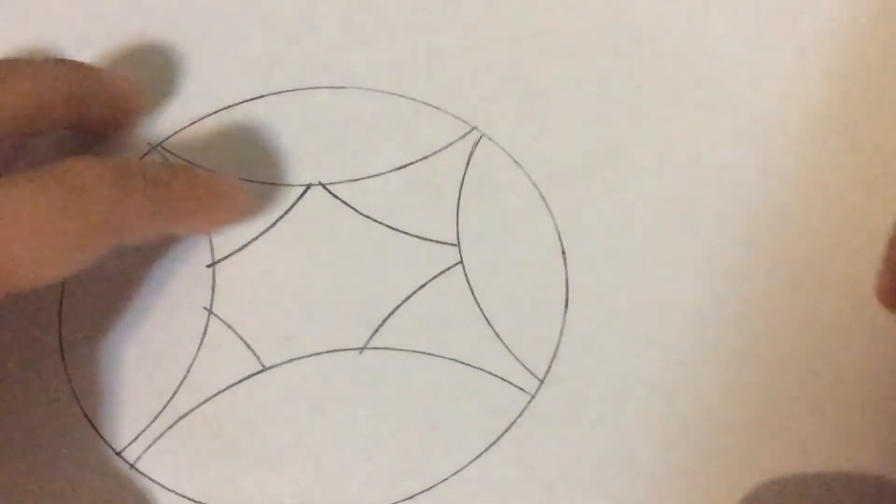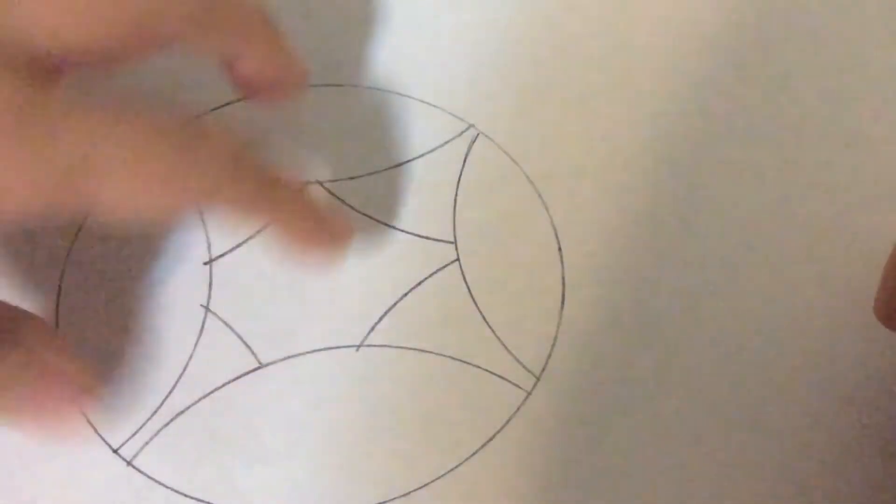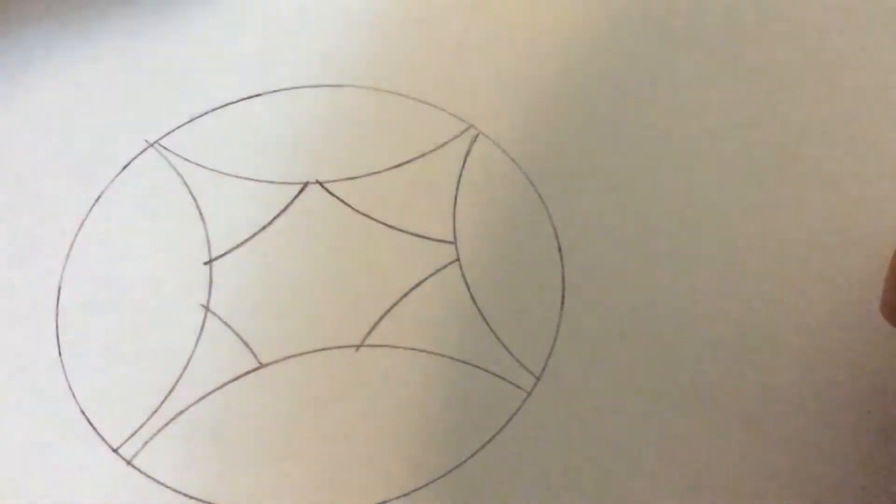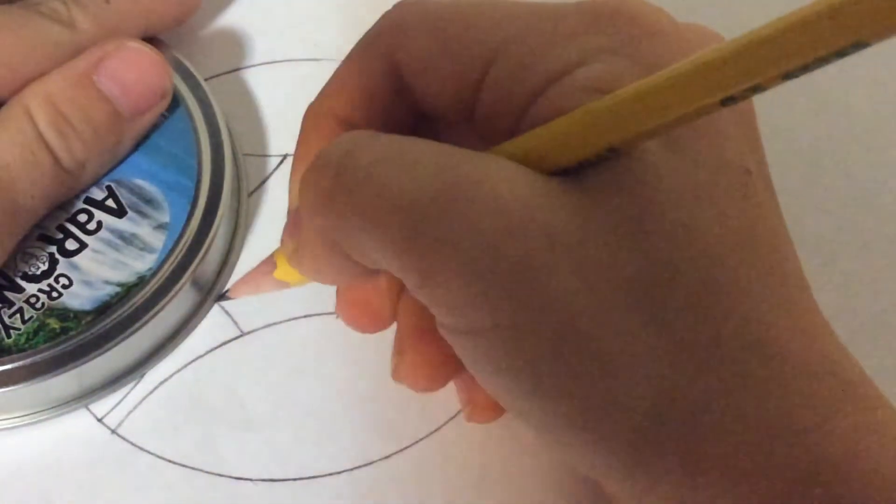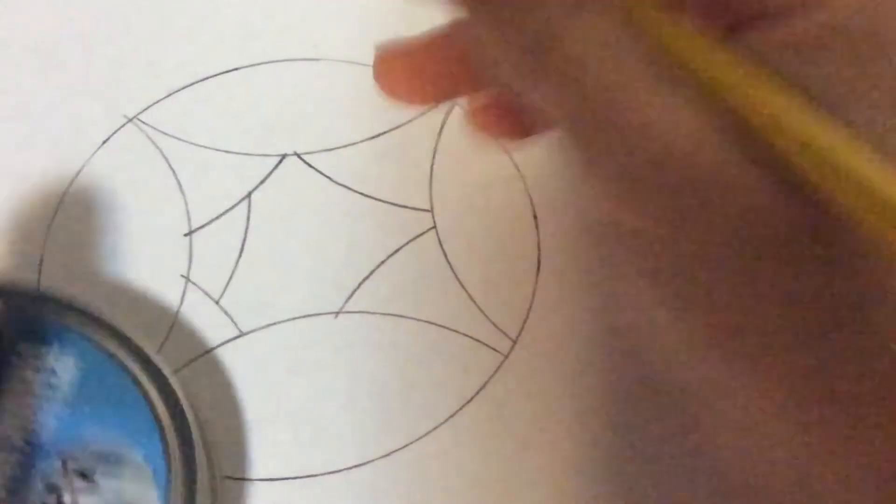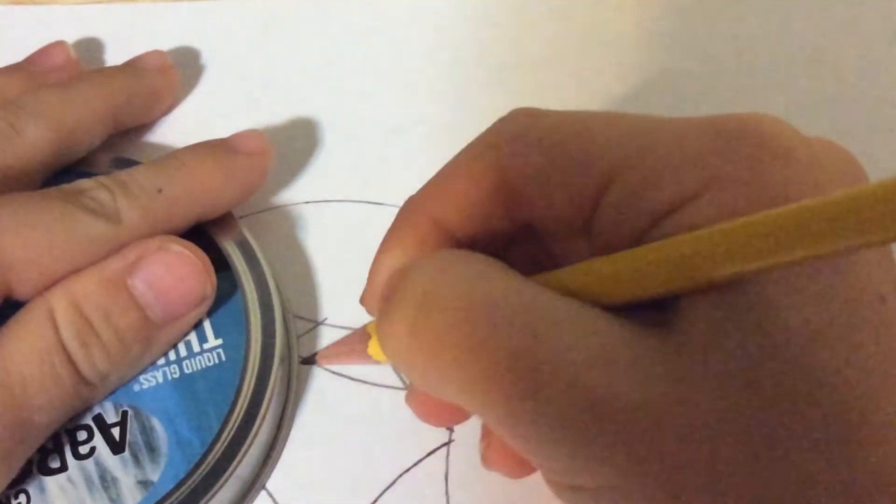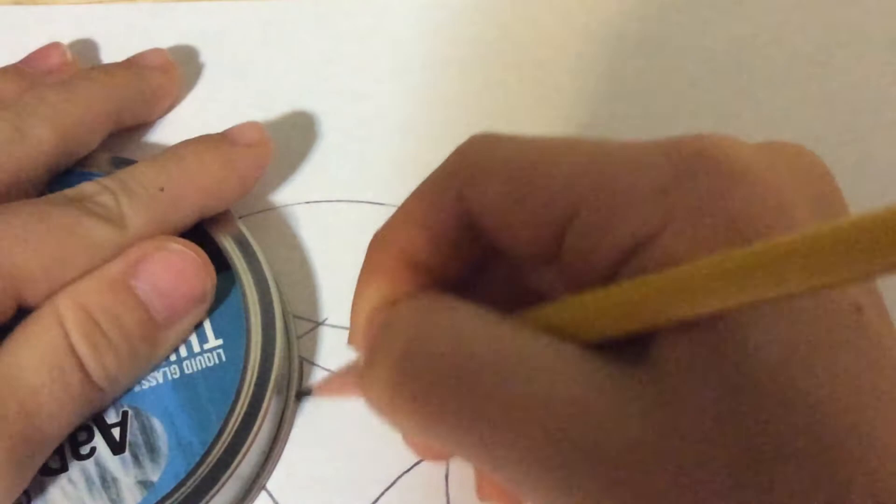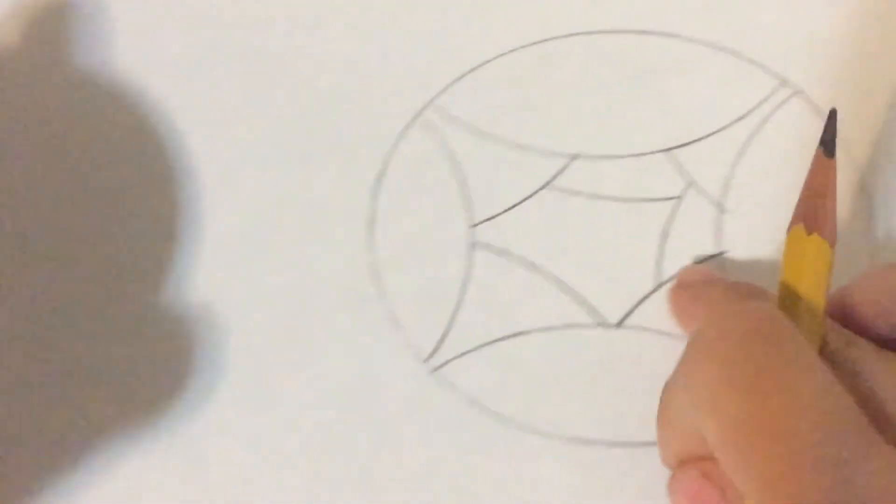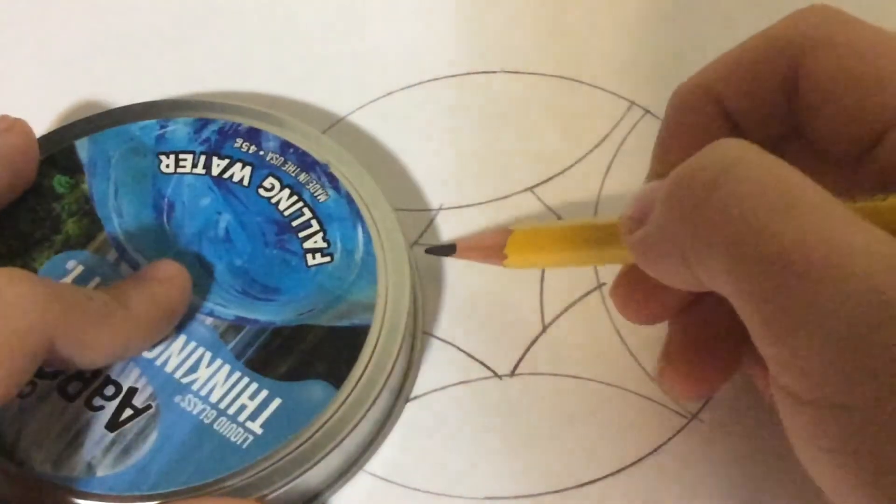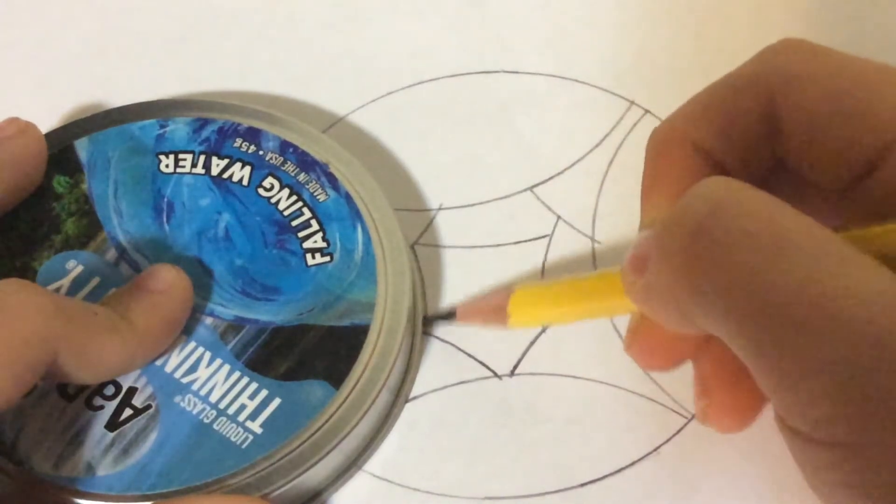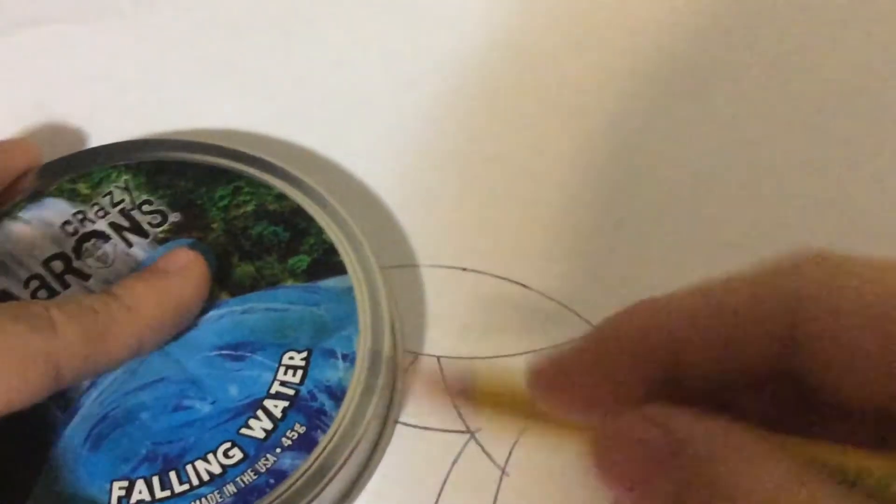You're gonna do something like that where there's curves there, and then you're gonna keep doing that. If you're not a very good drawer, you should probably try this out on the next step after you do the...